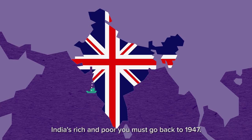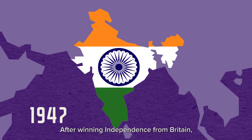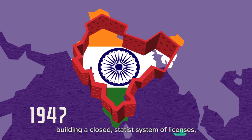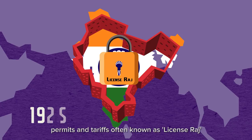To understand this huge gap between India's rich and poor, you must go back to 1947. After winning independence from Britain, India shut off its economy, building a closed statist system of license permits and tariffs, often known as License Raj. It was only more than 40 years later, in 1991, that India ended this era of central planning.